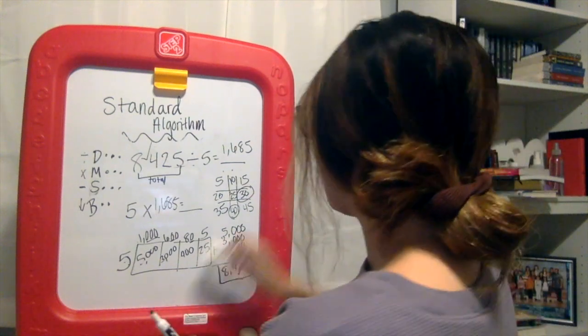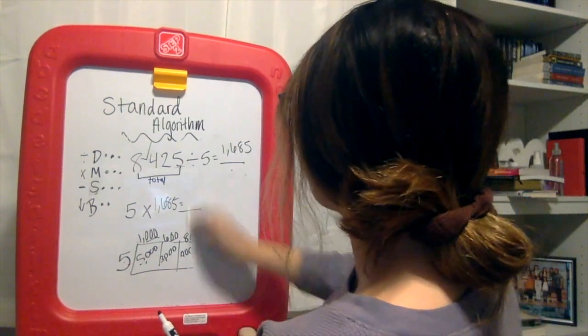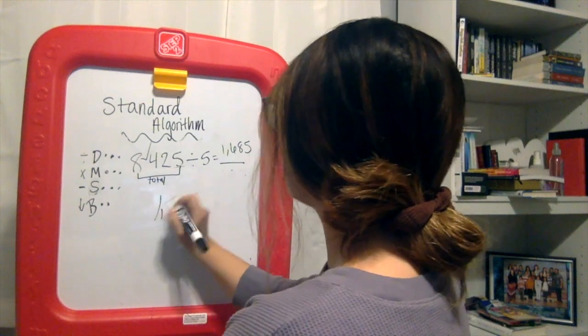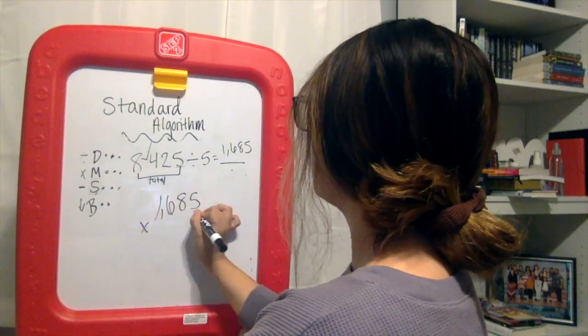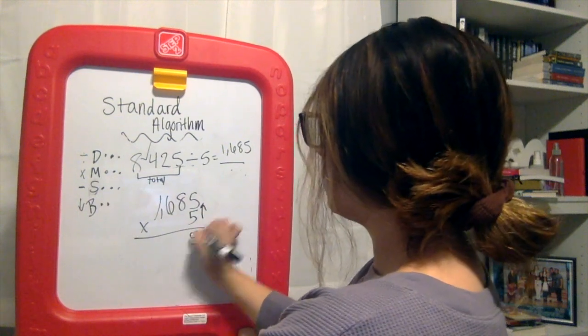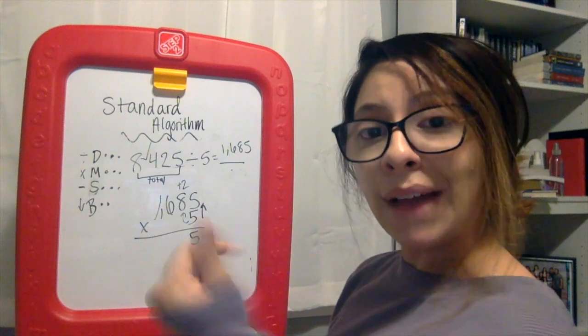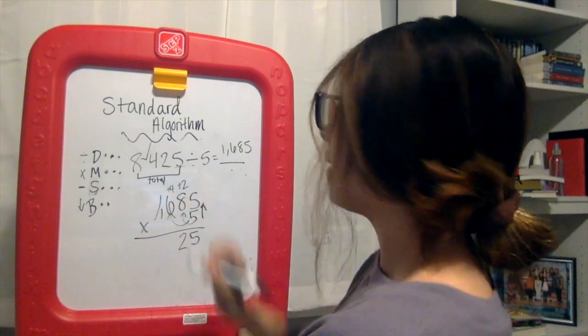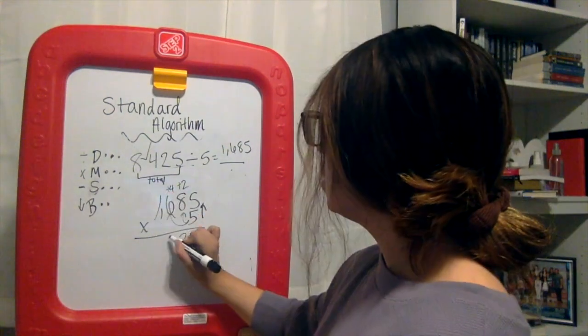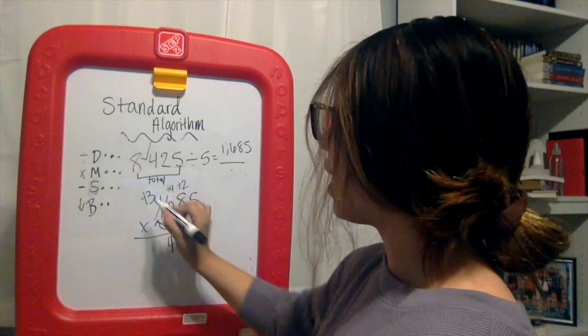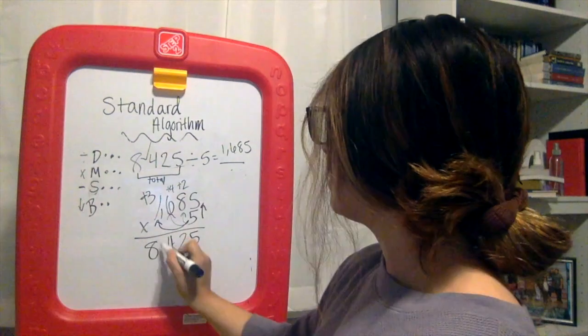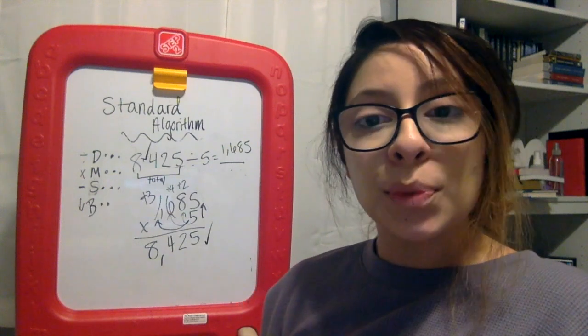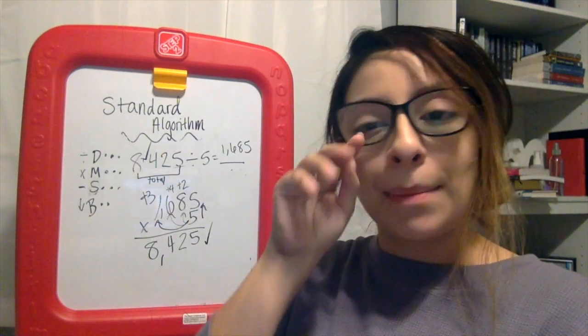So now if you liked area model, awesome. If you like the standard algorithm, let's go ahead and talk about that one too. So for standard algorithm, that is something that your parents know very well. Shout out to parents over there. So if I do 1,685 times 5, well, 5 times 5 is 25. 8 times 5, hopefully we're getting faster at our facts, that's 40 plus 2. And then 6 times 5 is 30 plus 4 is 34. 5 times 1 is 5 plus your 3 is 8. So we still got our same dividend. So no matter which strategy you like guys, pick which one you want and just make sure you always check your math because that's what great mathematicians do.